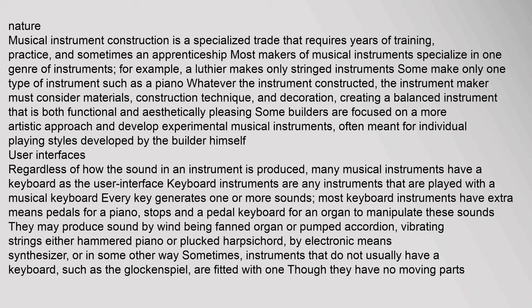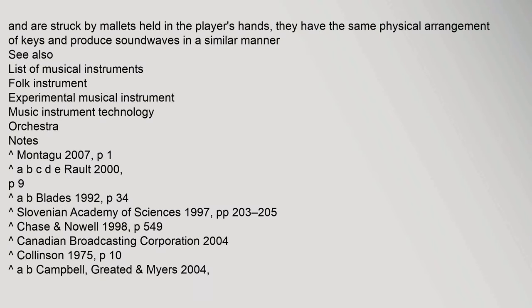Regardless of how the sound in an instrument is produced, many musical instruments have a keyboard as the user interface. Keyboard instruments are any instruments that are played with a musical keyboard. Every key generates one or more sounds; most keyboard instruments have extra means — pedals for a piano, stops and a pedal keyboard for an organ — to manipulate these sounds. They may produce sound by wind being fanned (organ) or pumped (accordion), vibrating strings either hammered (piano) or plucked (harpsichord), by electronic means (synthesizer), or in some other way. Sometimes, instruments that do not usually have a keyboard, such as the glockenspiel, are fitted with one.